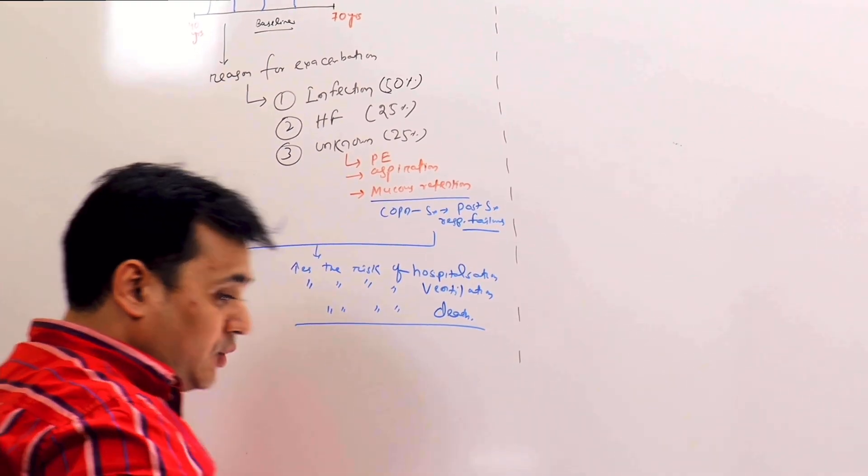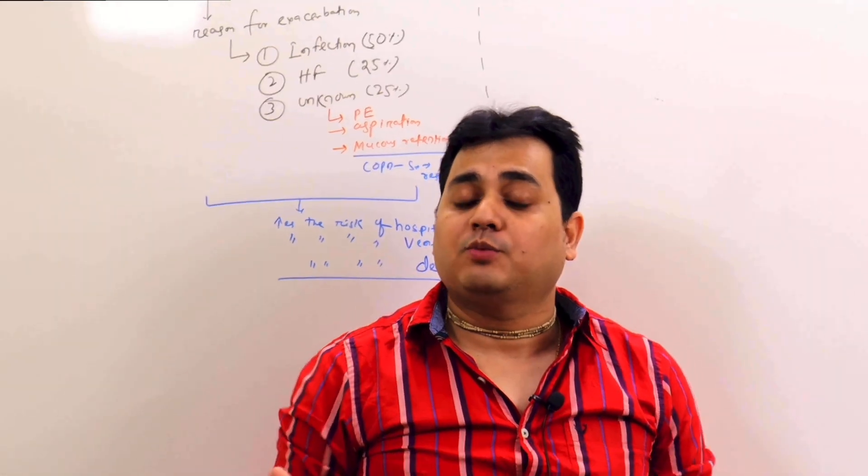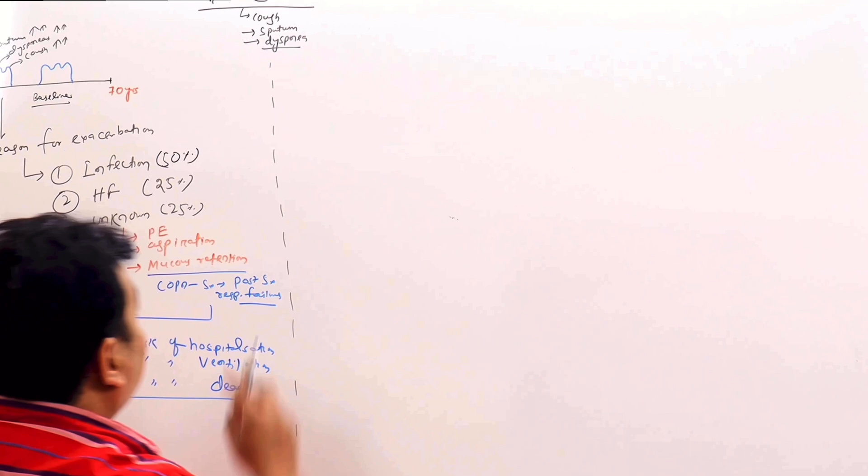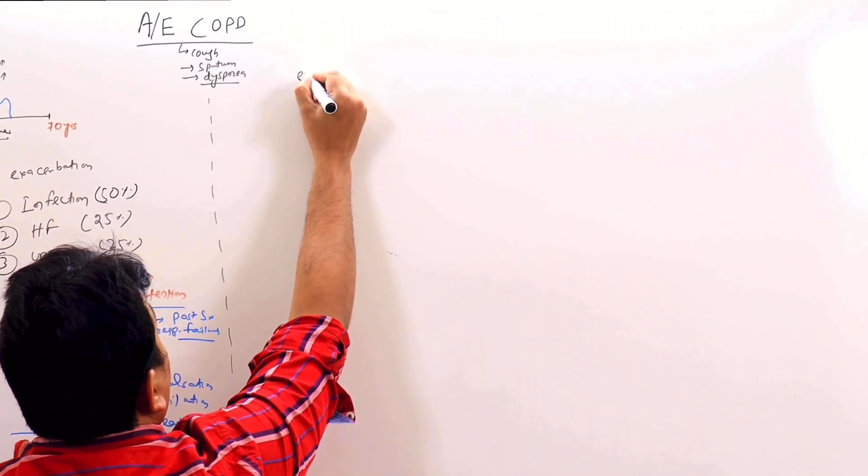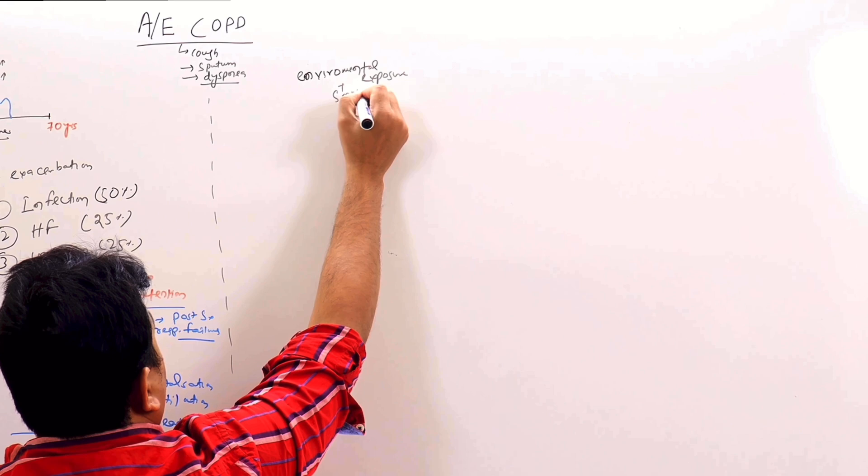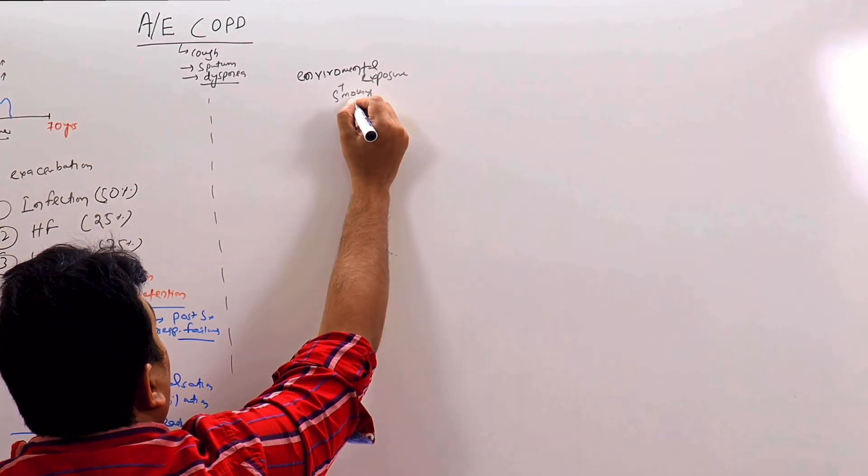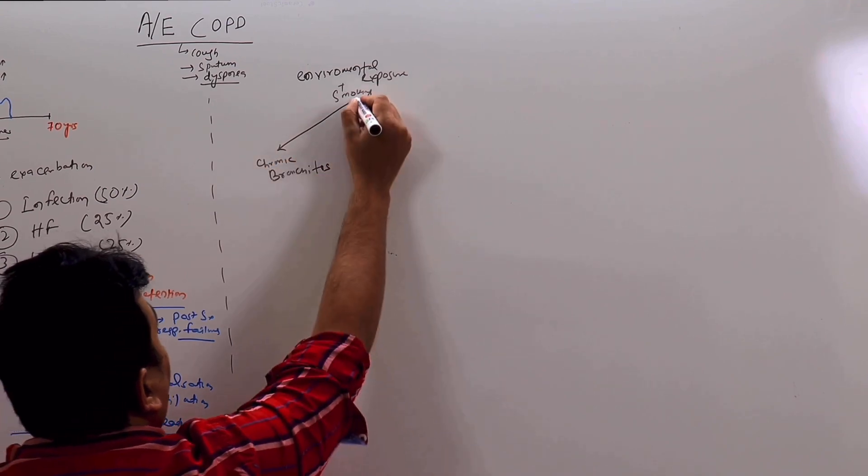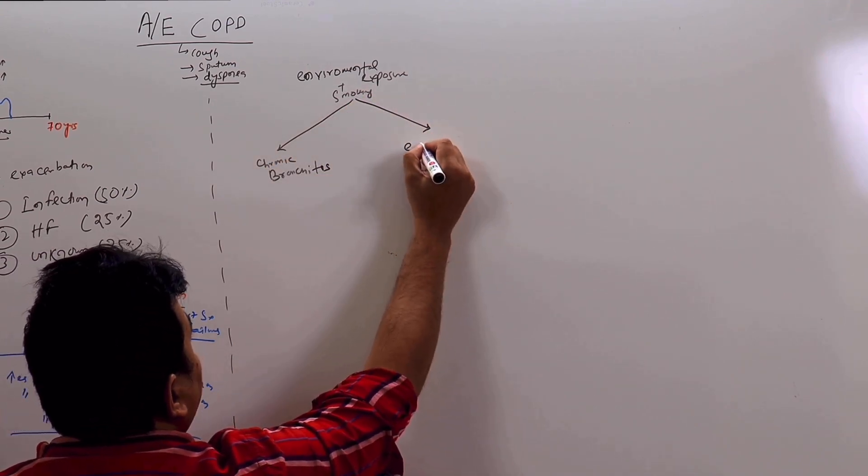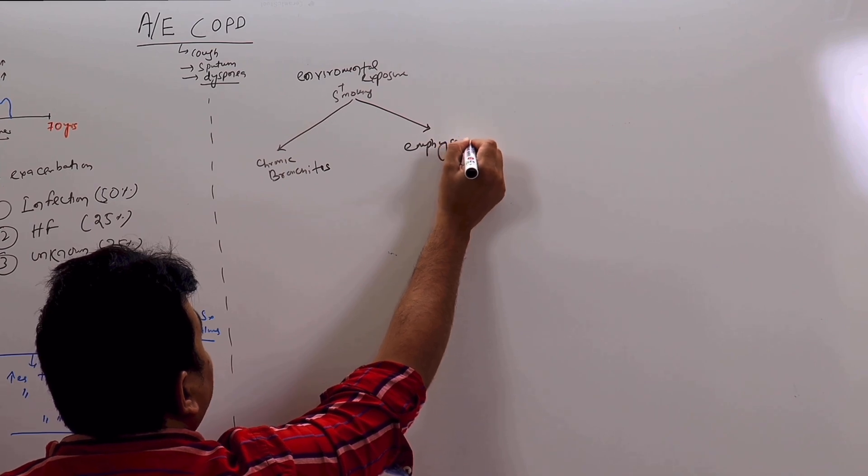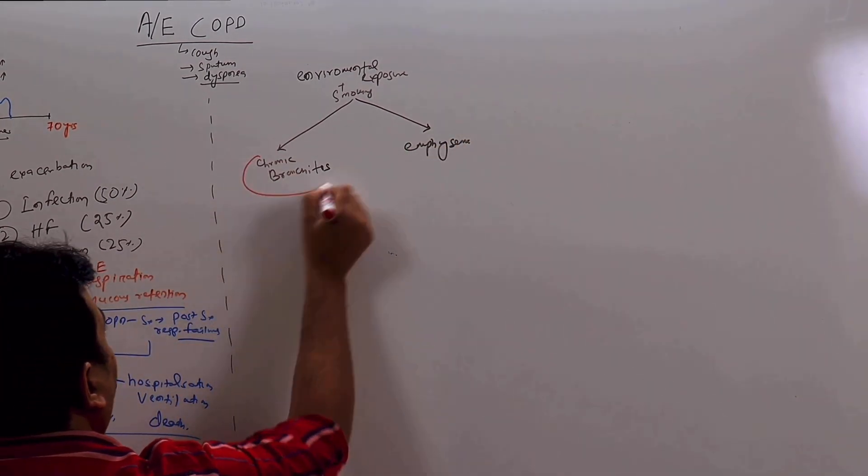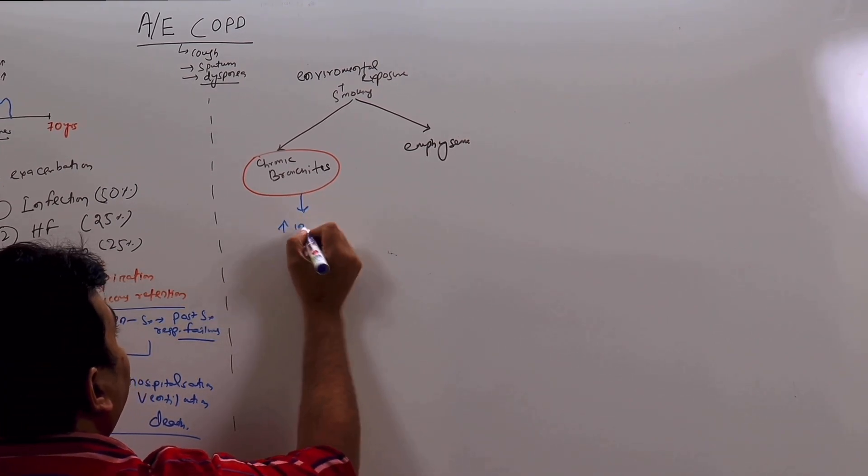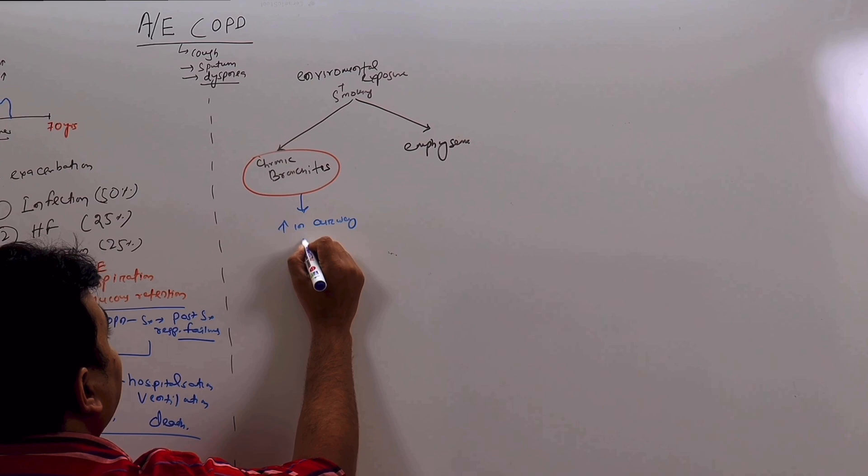So there are two kinds of COPD that we will be dealing with mostly. One is chronic bronchitis, another is emphysema. And the pathophysiology starts with environmental exposure or smoking. Most they will produce either chronic bronchitis or emphysema. What happens in chronic bronchitis is there is an increase in airway resistance.